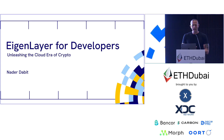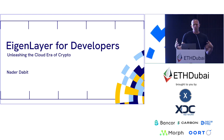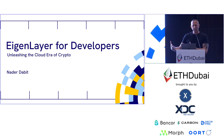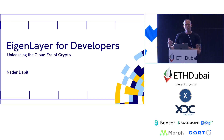My name is Nader. I'm a developer relations and developer experience engineer working with Eigenlayer. I've been doing developer education for about 10 years, been in the Web3 space for a little over three years. Before joining the blockchain world, I was at AWS for three and a half years leading the developer relations team, working on full-stack cloud — mobile SDKs, web SDKs, and all the cloud technology integrations.